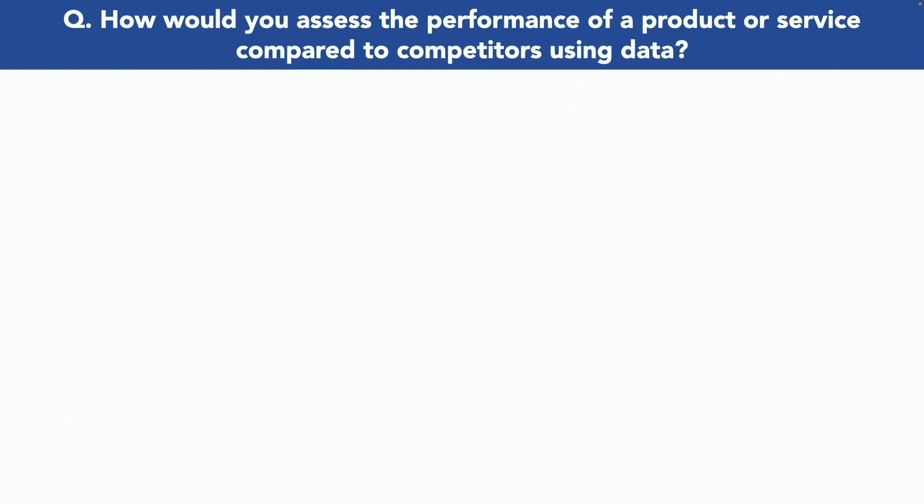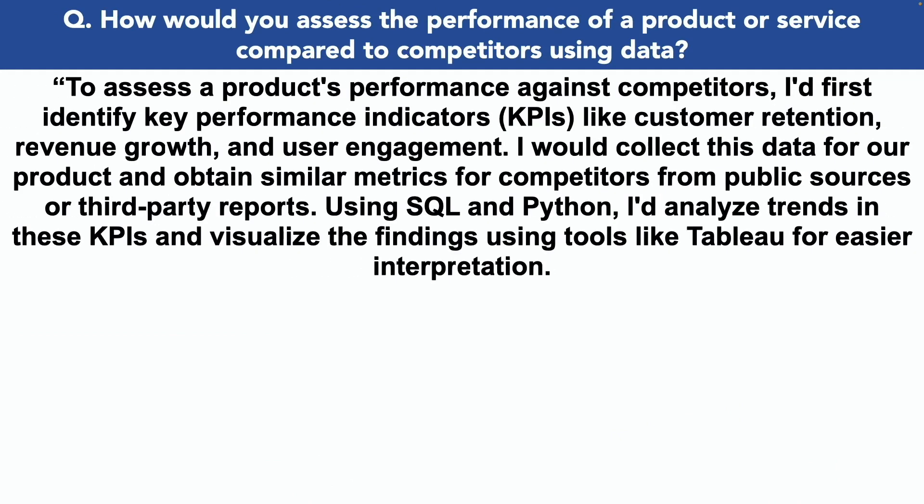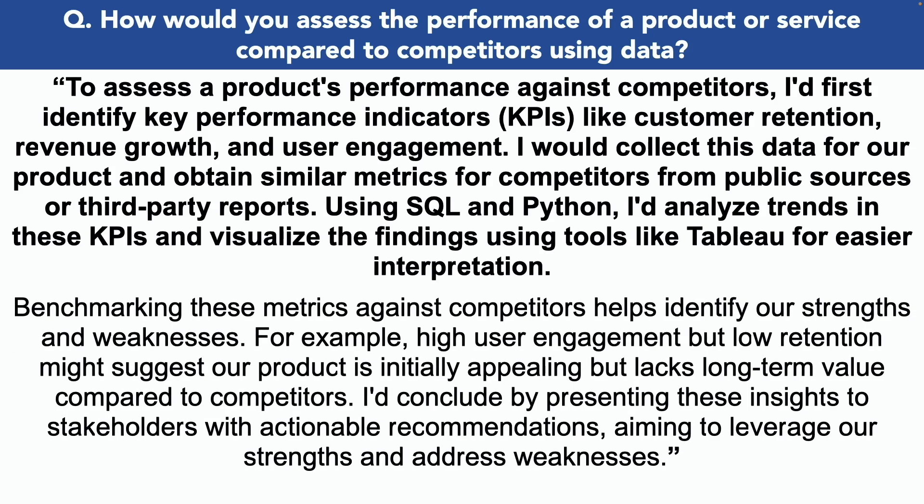How would you assess the performance of a product or service compared to competitors using data? To assess a product's performance against competitors, I'd first identify key performance indicators like customer retention, revenue growth and user engagement. I would collect this data for our product and obtain similar metrics for competitors from public sources or third-party reports. Using SQL and Python, I'd analyze trends in these KPIs and visualize the findings using tools like Tableau for easier interpretation. Benchmarking these metrics against competitors helps identify our strengths and weaknesses. For example, high user engagement but low retention might suggest our product is initially appealing but lacks long-term value. I'd conclude by presenting these insights to stakeholders with actionable recommendations, aiming to leverage our strengths and address weaknesses.